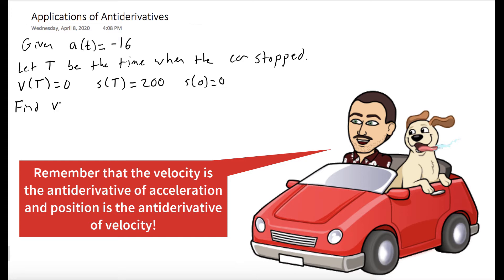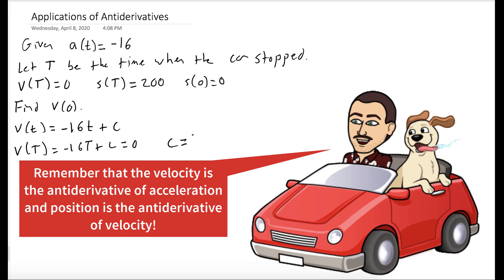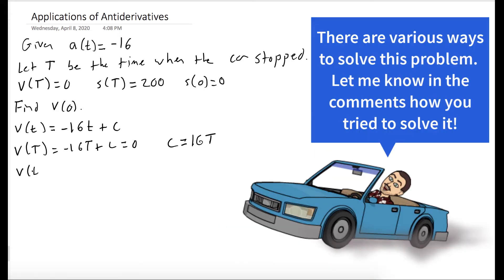Our goal is to find our initial velocity, so we want to find V of zero. We know our velocity is the antiderivative of the acceleration, so that's negative 16t plus some constant. Our question really boils down to finding that constant. We know that V of capital T is negative 16T plus C, and it's also equal to zero, so we get C is equal to 16T. So our velocity is negative 16t plus 16 capital T. I know there's a lot of T's here, but hopefully they look different in the drawing.